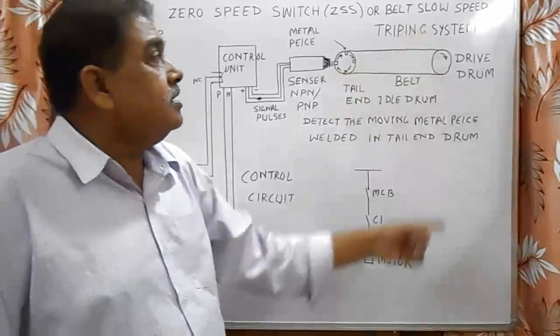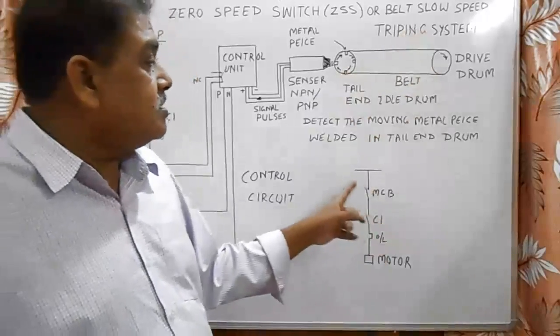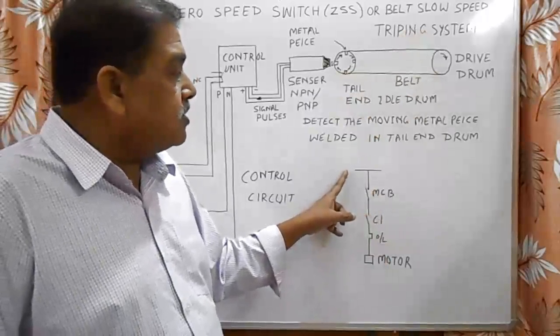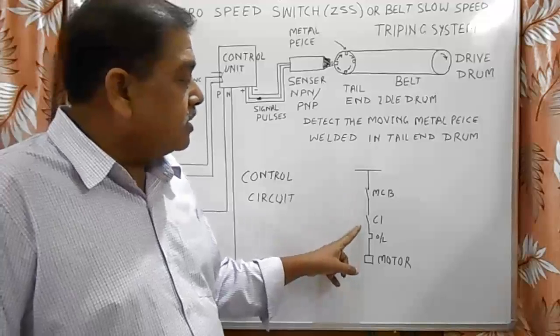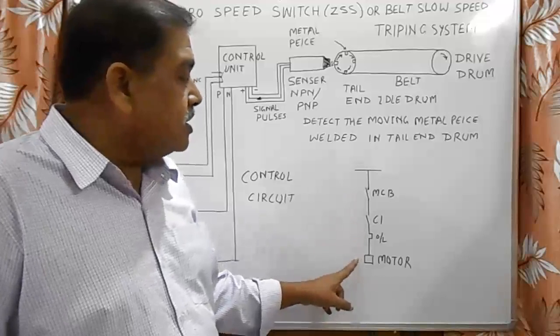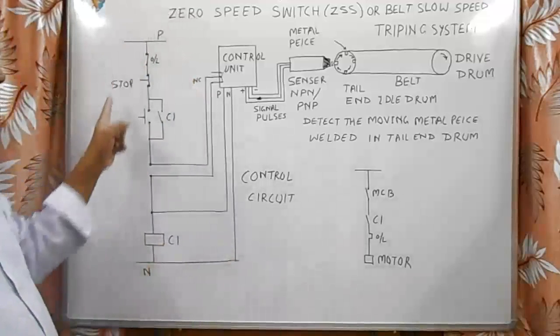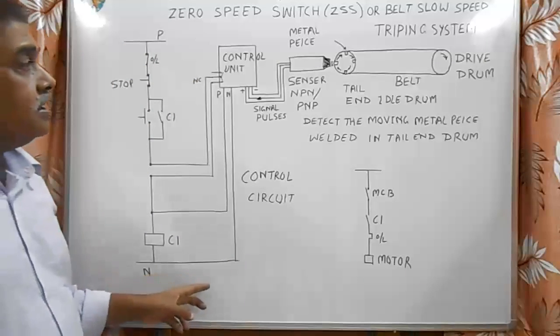In this system, there is a circuit diagram, a power circuit diagram. From MCC bus, MCB, contactor, overload, and motor. This motor is controlled by this C1 contactor. This is the control circuit for this contactor.